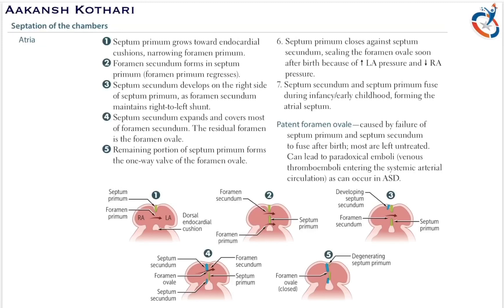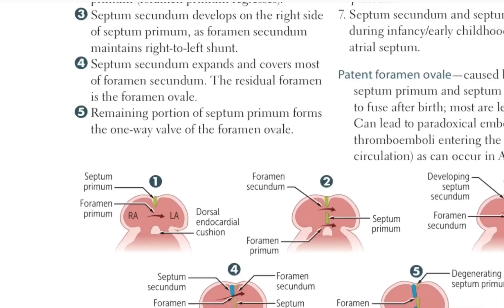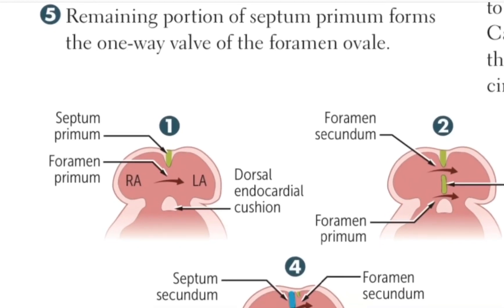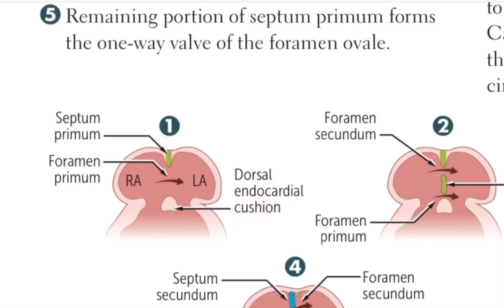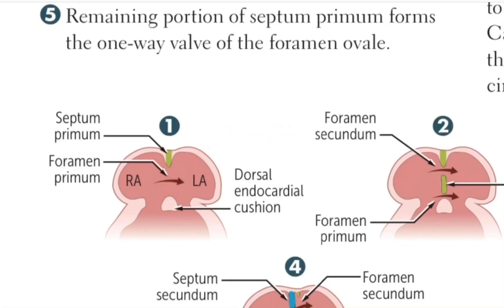In the atrial septum, the septum primum grows towards the endocardial cushion, narrowing the foramen primum. Let me zoom into this diagram and show you. This is the septum primum which grows towards the endocardial cushion. This is the endocardial cushion. So the septum primum grows towards the endocardial cushion and there is a formation of foramen primum. This is called as the foramen primum.